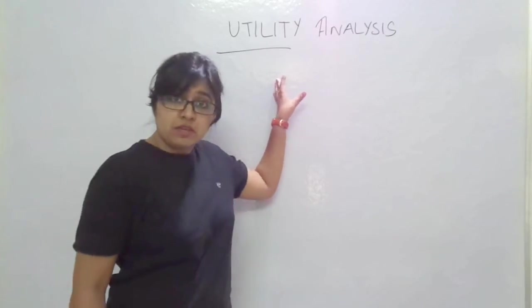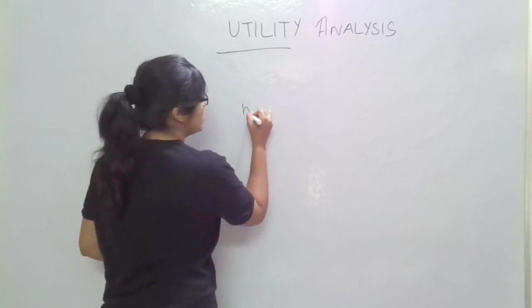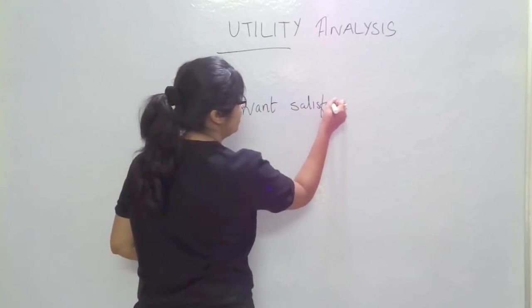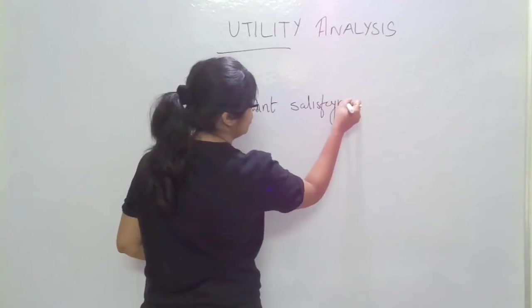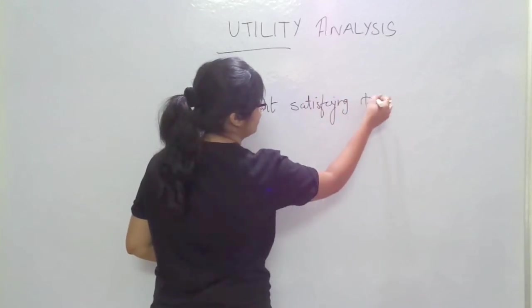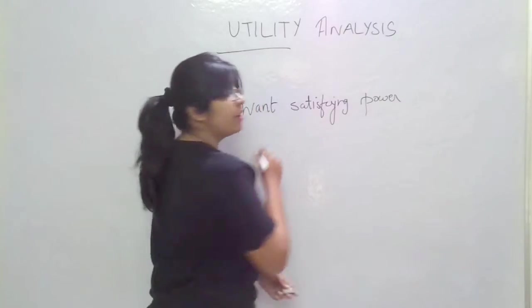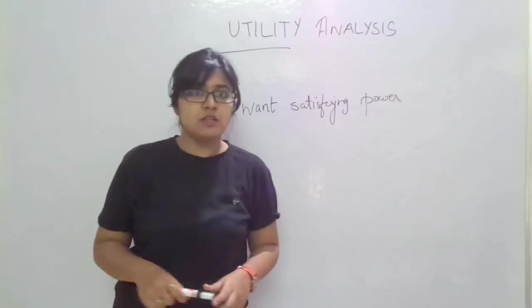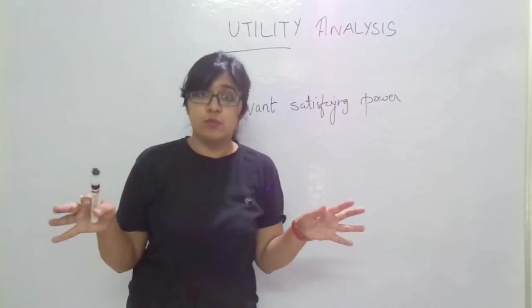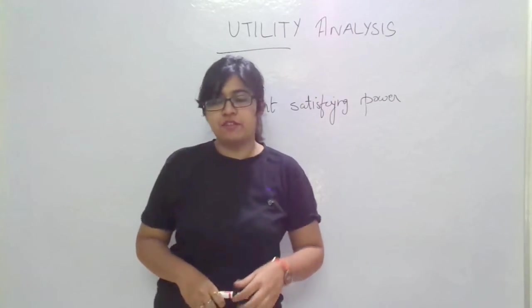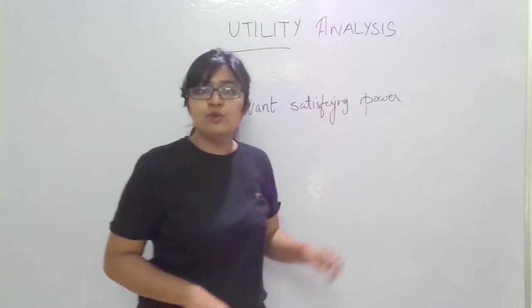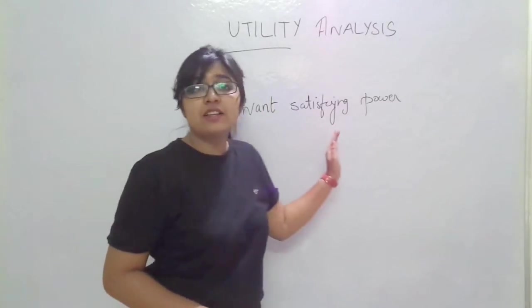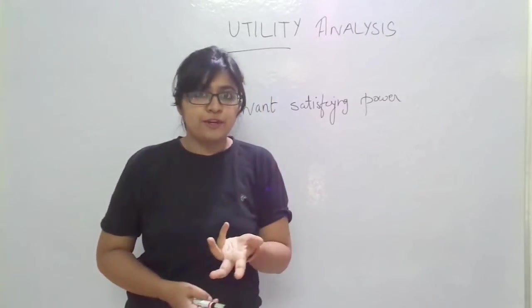The term utility means the want satisfying power of a commodity. In the previous video we learnt about want, or the unlimited wants that humans have. There is something known as utility which means that there is want satisfying power in a particular commodity.